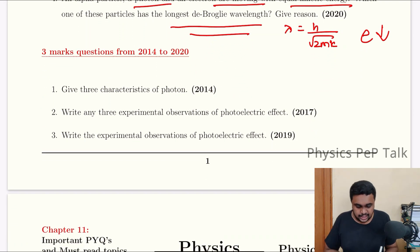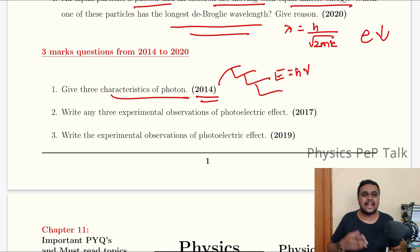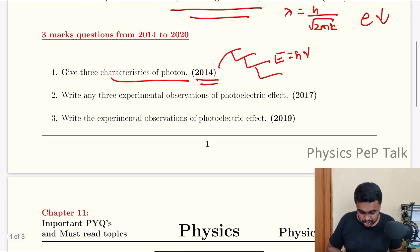3 mark question: Give any three characteristics of photon, 2014. It is electrically neutral. It travels with the speed of light. Energy of a photon is given by E equals h nu. It is not affected by electrical and magnetic field. So you can easily score more marks.